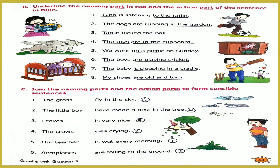Number 5: 'We went on a picnic on Sunday.' 'We' is the naming part; 'went on a picnic on Sunday' is the action part. Number 6: 'The boys are playing cricket.' 'The boys' is the naming part; 'are playing cricket' is the action part. Number 7: 'The baby is sleeping in a cradle.' 'The baby' is the naming part; 'is sleeping in a cradle' is the action part. Number 8: 'My shoes are old and torn.' 'My shoes' is the naming part; 'are old and torn' is the action part.